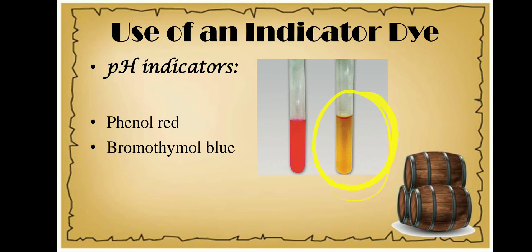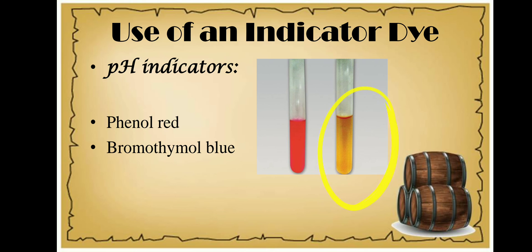Phenol red is a pH indicator: under acidic conditions it will be yellow in color, and if the pH is alkaline it will show a magenta or pink color. So if the glucose-containing media turns yellow, we understand that the organisms are producing acids. If it changes to pink, then the organism is producing alkali.